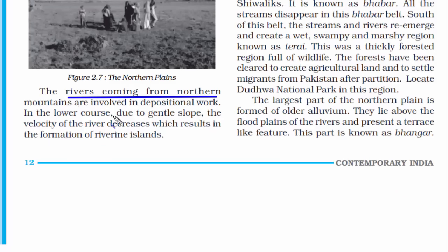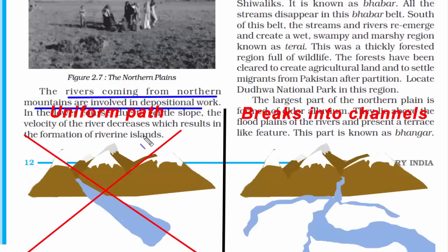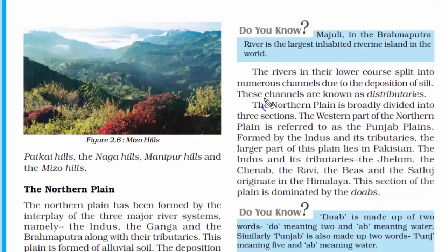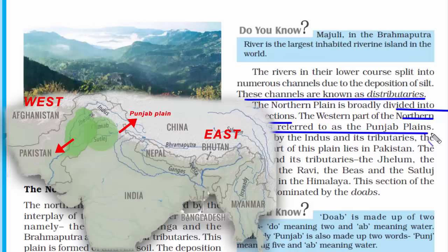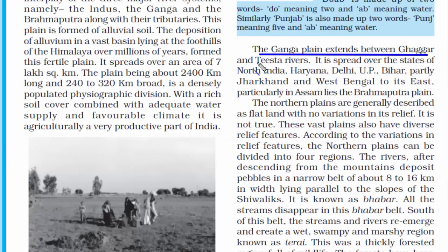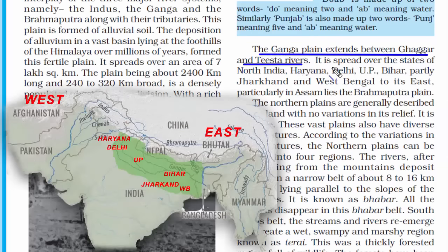When a river comes from the mountains and rushes into the plains, it does not follow a uniform path — it breaks into different channels called distributaries. The Northern Plain is broadly divided into three sections: the Punjab Plains in the west, formed by the Indus and its tributaries (largely lying in Pakistan); the Ganga Plain between the Ghaggar and Tista rivers, passing through Haryana, Delhi, UP, Bihar, Jharkhand, and West Bengal, finally draining into the Bay of Bengal; and the Brahmaputra plains in the east.